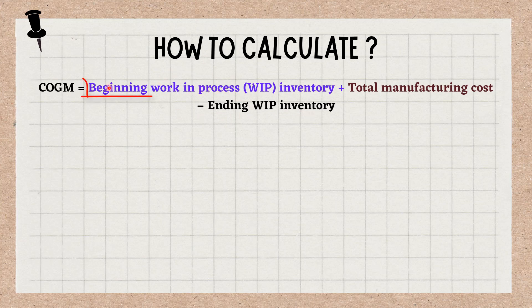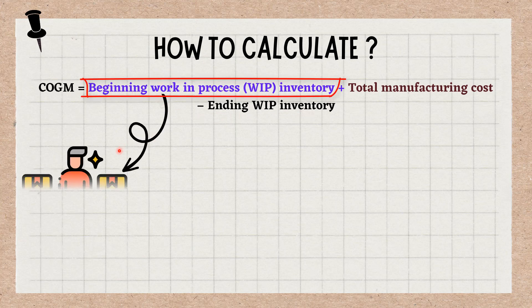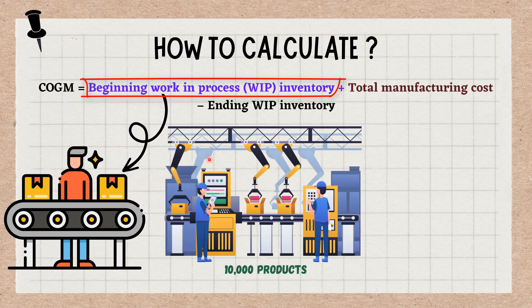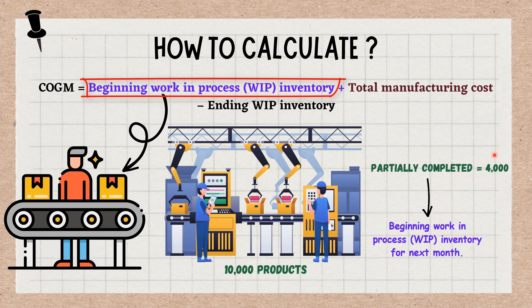In this formula, Beginning Work in Process Inventory refers to the value of products in production that aren't yet completed. It typically serves as the work in process inventory at the end of an accounting period or the beginning of a new period. For example, a company has 10,000 products for the last month, with 4,000 products only partially completed. Your work in process inventory for the following month would be 4,000 products.